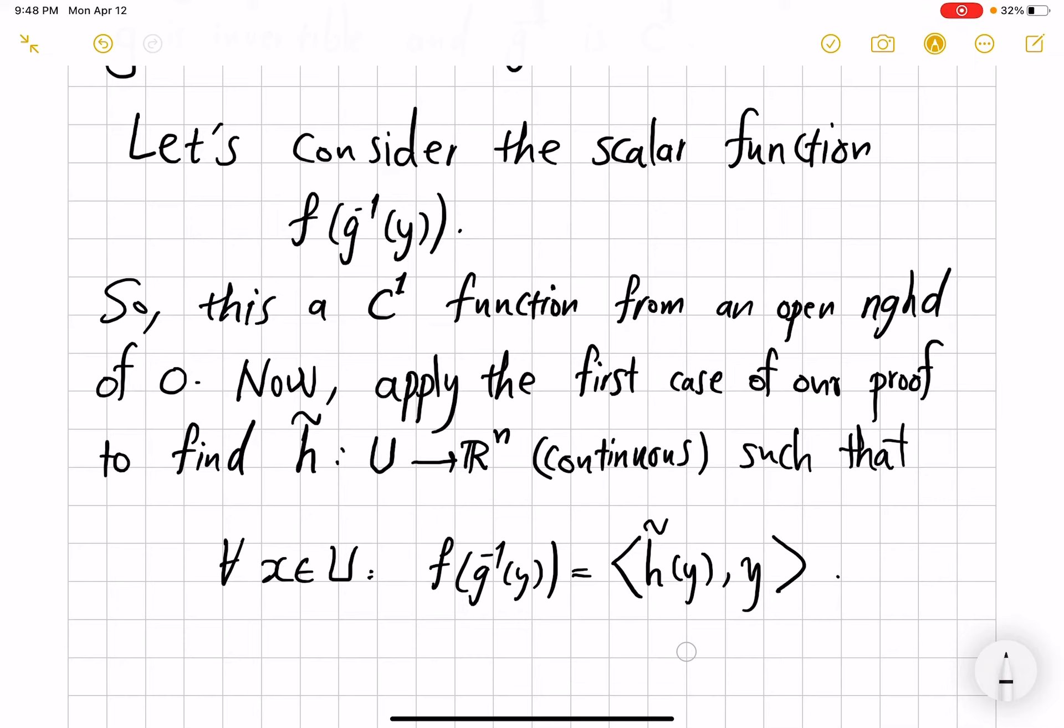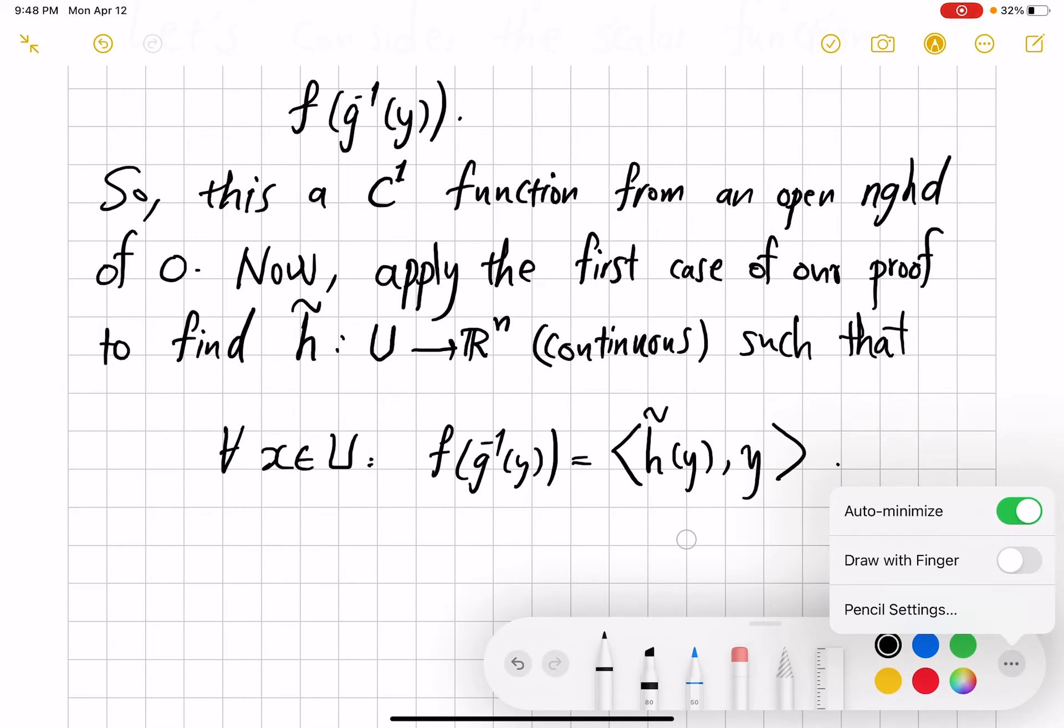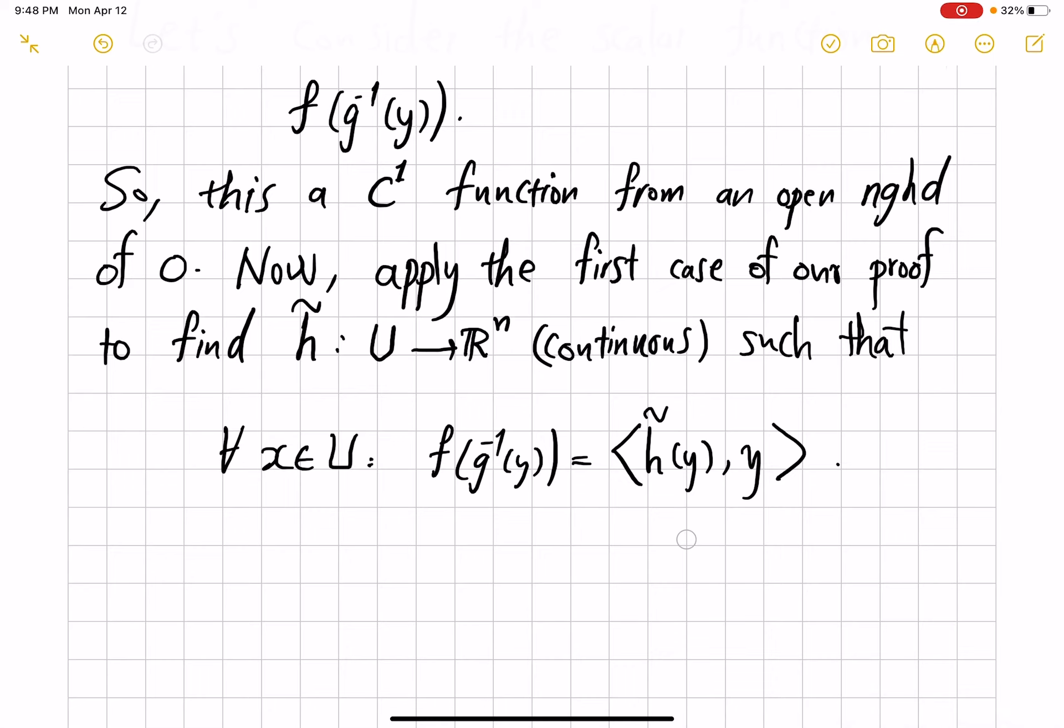So the notation y is, of course, of superficial difference, but it helps visualize the change of variables from x to y via the map g and g inverse. But the existence of this h tilde continuous was what we proved in the first case. So this is a C¹ function, f of g inverse is a C¹ function, and as a result, we can find this h tilde solving this equation.